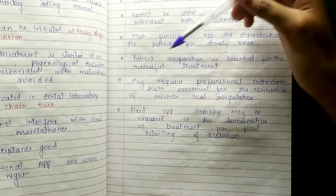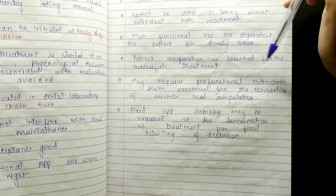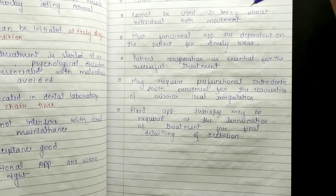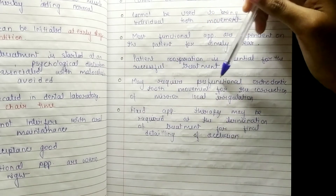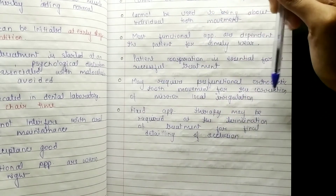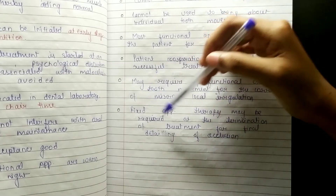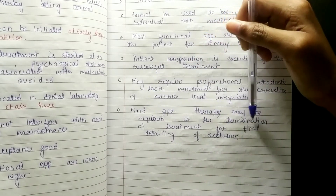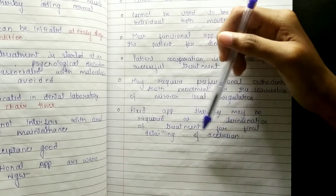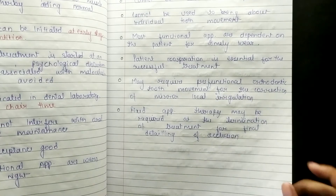Most functional appliances are dependent on the patient for timely wear — patient cooperation is essential for successful treatment, which is often not received because these are children. It may require pre-functional orthodontic tooth movement for the correction of minor local irregularities, and then fixed appliances may also be required at the termination of treatment for final detailing of occlusion.